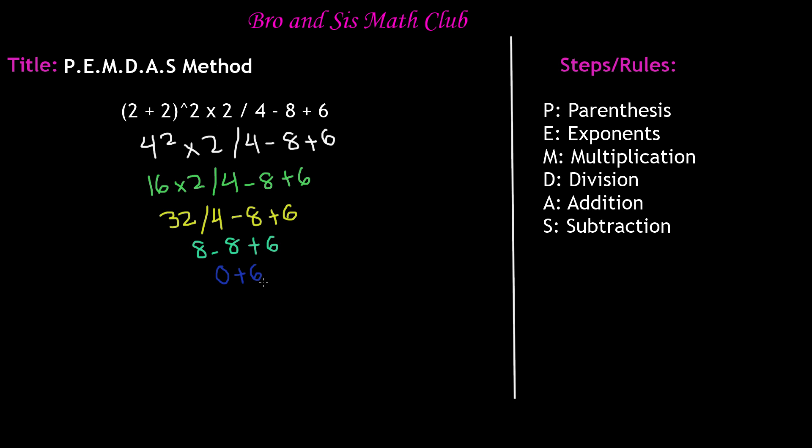We'll write 0 plus 6. And the last operation remaining is addition. So 0 plus 6, as we all know, is 6 because anything added to 6 is that same number. So that means when we went from this whole big word problem, which was in parentheses, 2 plus 2 to the power of 2 times 2 divided by 4 minus 8 plus 6, it all simplifies to 6. So our final answer is 6. If you take it step by step by using the PEMDAS method, this is very easy. No matter what the problem is, just use the PEMDAS method.